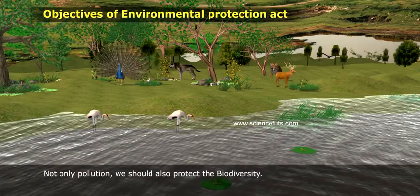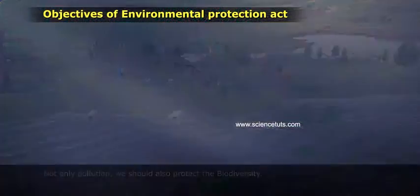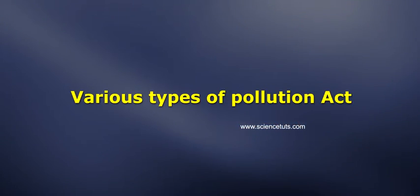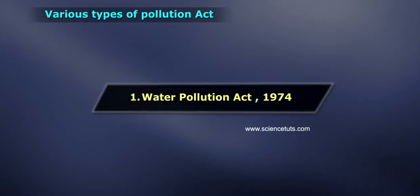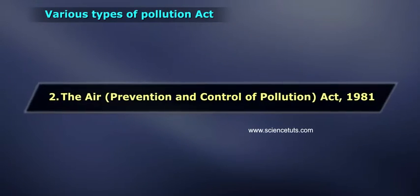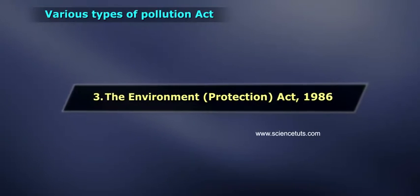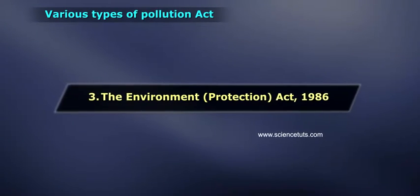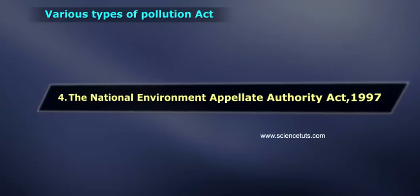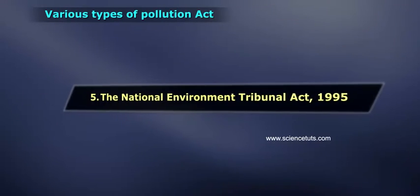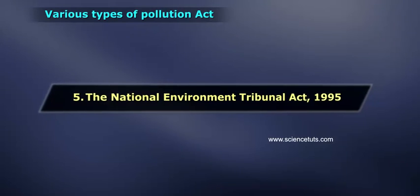Not only pollution, we should also protect biodiversity by giving protection to endangered species. Various types of pollution acts: One — Water Pollution Act 1974. Two — The Air Prevention and Control of Pollution Act 1981. Three — The Environment Protection Act 1986. Four — The National Environment Appellate Authority Act 1997.